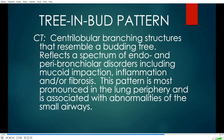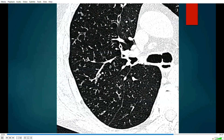Let's move on to a final example: the tree-in-bud pattern, seen on CT only. It consists of centrilobular branching structures that resemble a budding tree, reflecting a spectrum of endo- and peribronchial disorders including mucoid impaction, inflammation, and fibrosis. The bronchioles are very small — usually two millimeters or less in diameter. This pattern is most pronounced in the lung periphery and is associated with abnormalities of the small airways. These are impacted bronchioles probably containing mucus — they no longer contain air — and they're budding and branching.